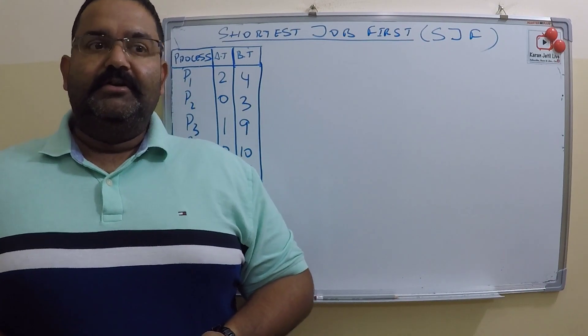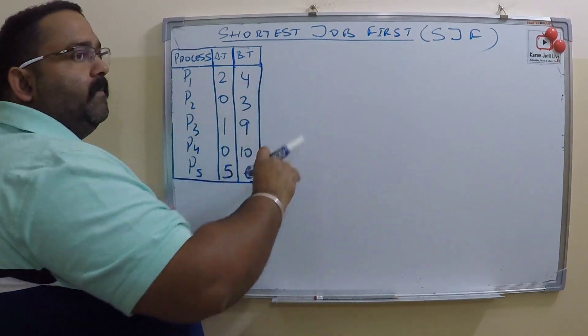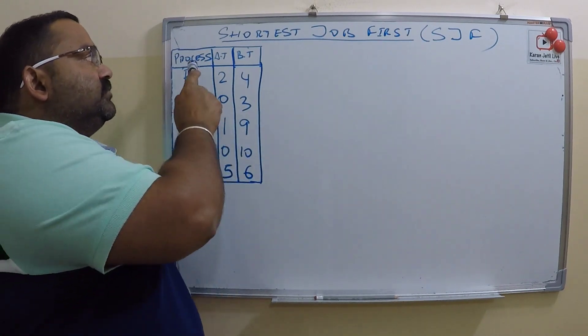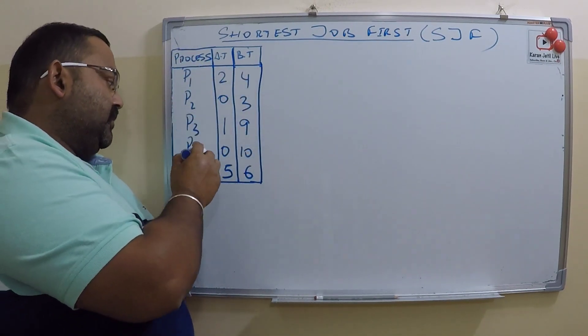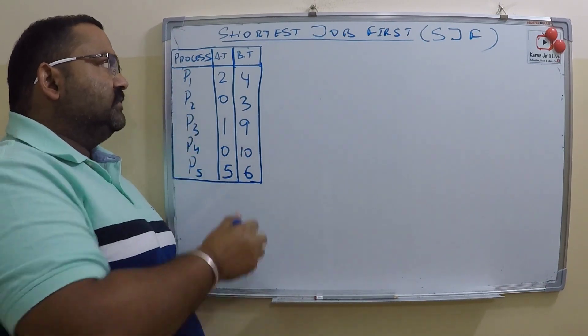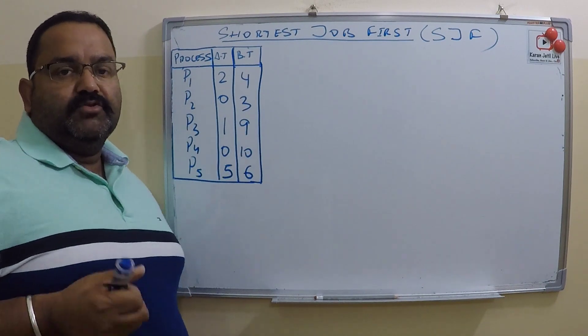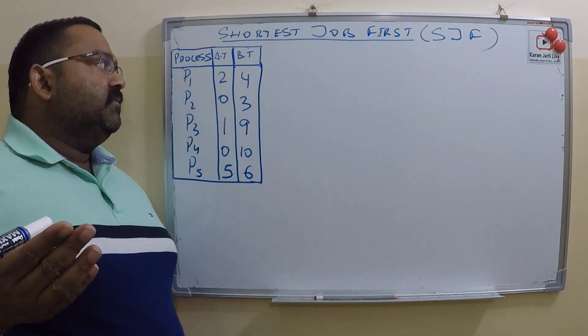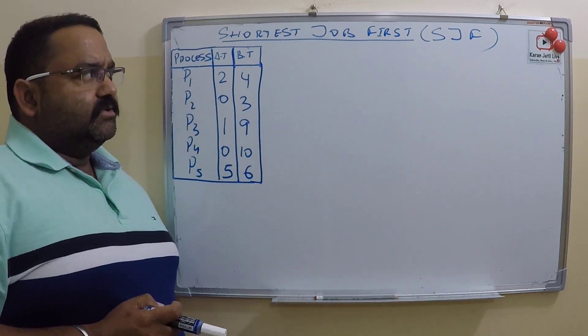Now we will discuss Shortest Job First. I have total five processes: P1, P2, P3, P4, and P5. These are their arrival times and this is the burst time. Burst time is how much time of the CPU they need to finish their execution.